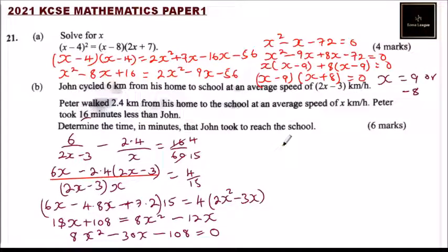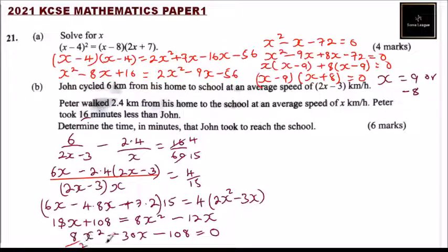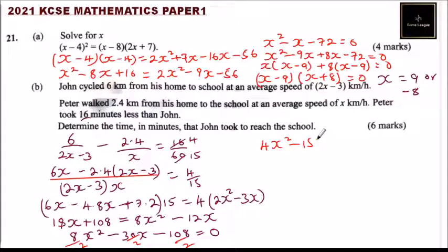This is a quadratic equation. We divide through by 2 to simplify: 4x squared minus 15x minus 54 equals 0. Using the quadratic formula: x equals 15 plus or minus the square root of (15 squared plus 4 times 4 times 54), all divided by 2 times 4, which is 8.